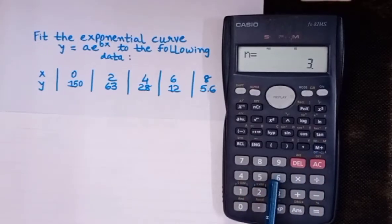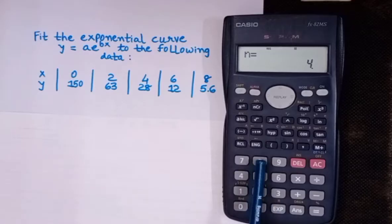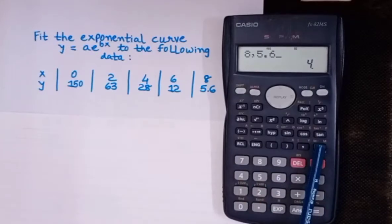Then the fourth value is 6 comma 12, again press M plus. Don't press any other keys, otherwise you'll get a syntax error. Then the last value is 8 comma 5.6, again press M plus.